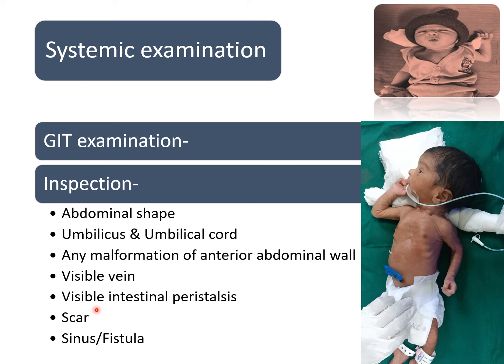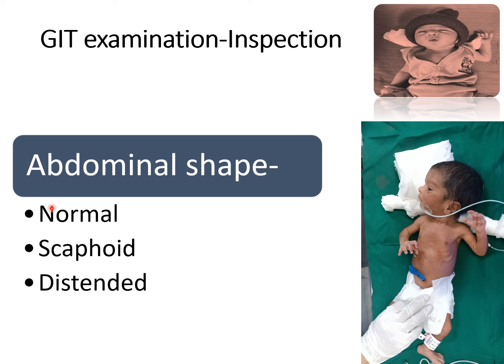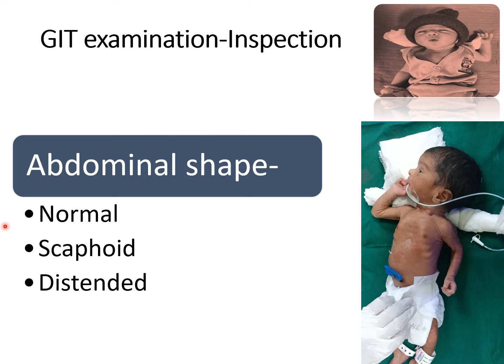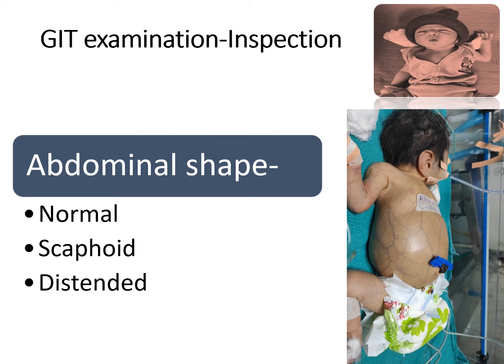In abdominal shape, either the normal abdominal shape as you can see in this video, or a scaphoid abdomen — for example in congenital diaphragmatic hernia — or a distended abdomen because of intestinal obstruction or necrotizing enterocolitis. The patient may also have a congenital kidney disorder or liver disease.